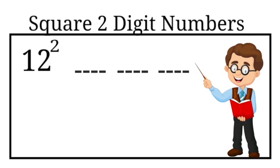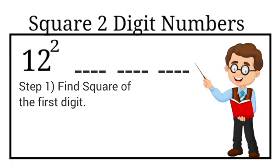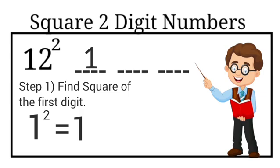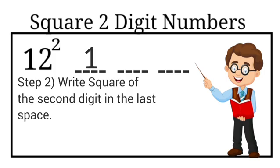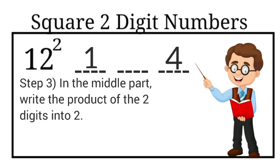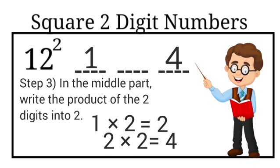In part one, we write the square of the first digit of the number. The first digit is 1, so 1 squared is 1 — the first part is 1. For the final part, we write the square of the last digit. The last digit is 2, so 2 squared is 4 — the last part is 4. For the middle part, we write the product of the two digits multiplied by 2: 1 times 2 is 2, and 2 times 2 is 4 — so the middle part is also 4.